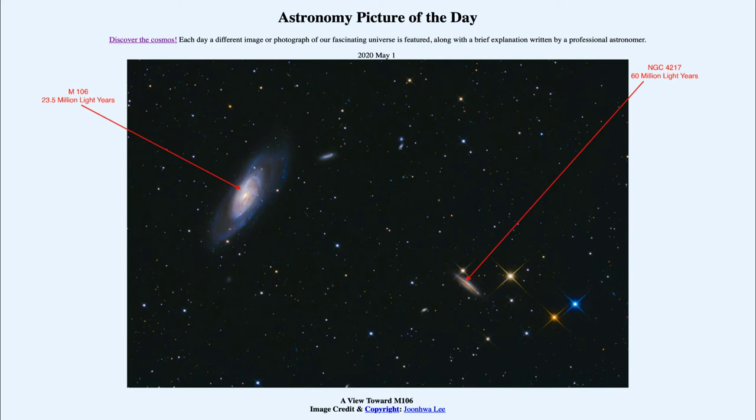And when we look at things like this in the sky we do lose that three-dimensional aspect. You cannot tell just by looking at these galaxies that one is twice as far away as the other.